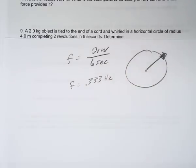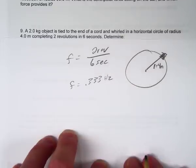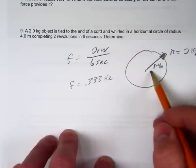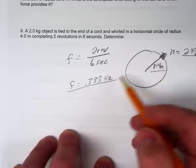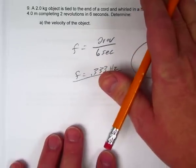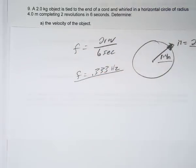So we have a frequency. We know the radius is four meters and the mass is two kilograms. We have r = 4, m = 2, and f = 0.33. Then they want us to find the velocity of the object - what kind of velocity? Tangential velocity.